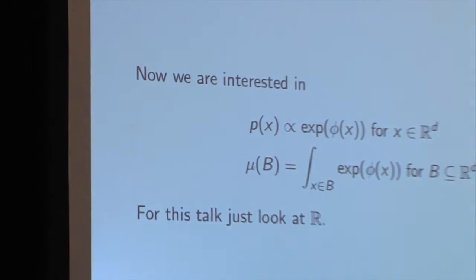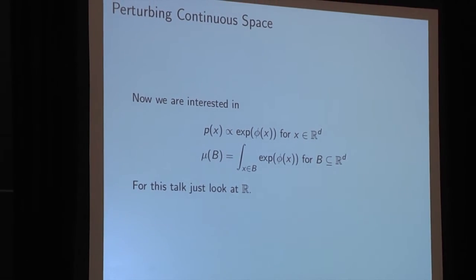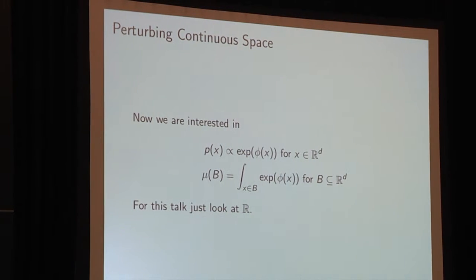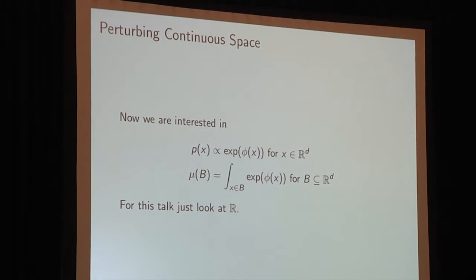Now we move away from discrete space. We're interested again in P of X, proportional to exp of phi of X, defined over the reals. We're going to define a measure function that takes in a subset B of the reals and computes the integral — the volume under the unnormalized density. This works in any dimension, but for this talk we'll just look at R, the reals.